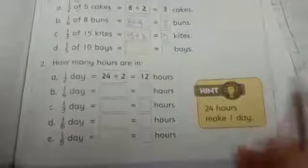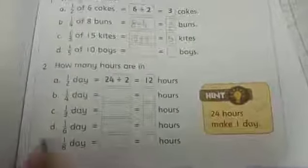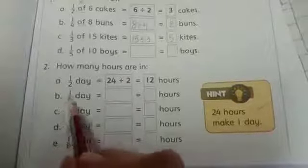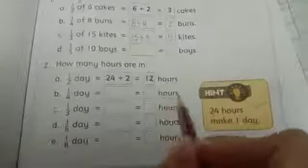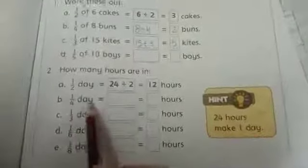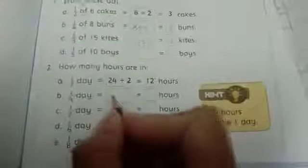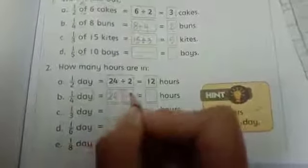Hint: 24 hours make one day. Now we will tell you that the denominator, we have to divide. What will we divide? So here we have to tell you there is a day, so how many hours are there? 24 hours, 24 is divided by 4.